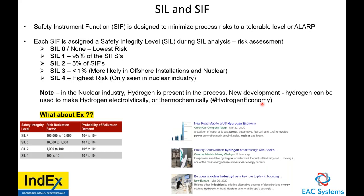SIL four — the highest risk level — is only seen in the nuclear industry, where hydrogen is present in the process. A new development is that the nuclear industry can be used to make hydrogen electrochemically and thermochemically. Even in South Africa, Shell is announcing breakthroughs where nuclear plants are starting to produce hydrogen. What about hazardous areas? Usually in the nuclear industry, hazardous area considerations have not been considered — it was not even thought about or known.